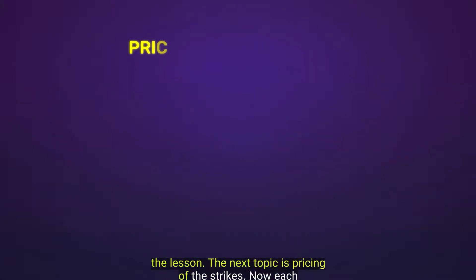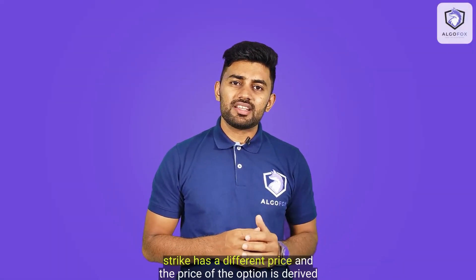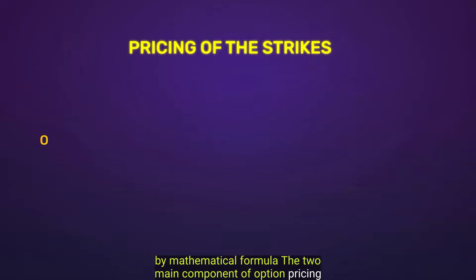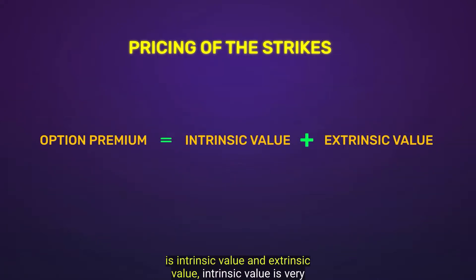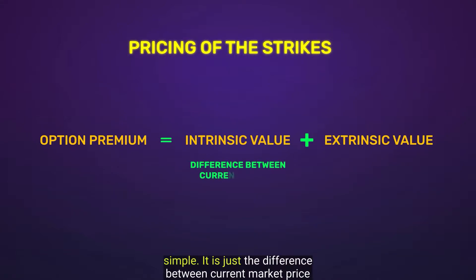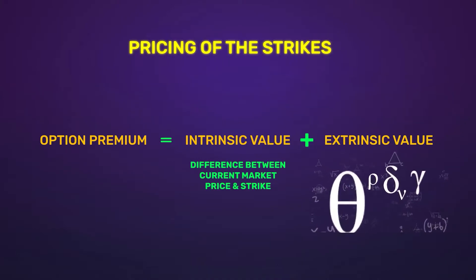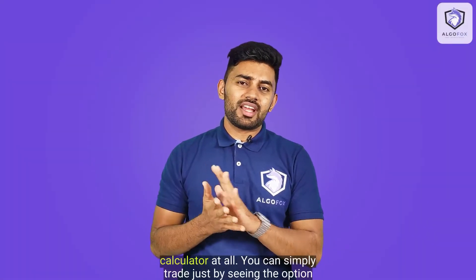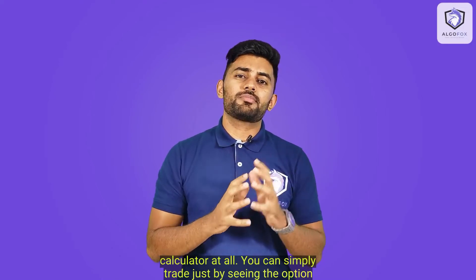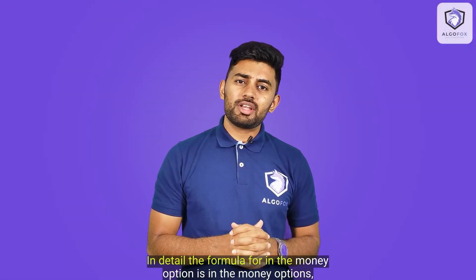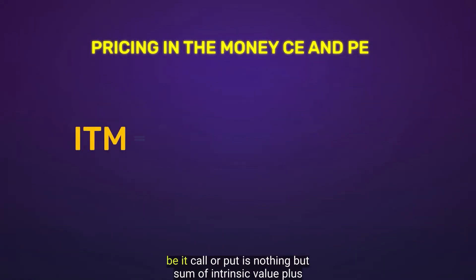The next topic is pricing of the strikes. Each strike has a different price, and the price of the option is derived by a mathematical formula. The two main components of option pricing are intrinsic value and extrinsic value. Intrinsic value is simply the difference between the current market price and the strike price. Extrinsic value is made up of a complex mathematical formula calculated using the Black-Scholes model. As a trader you need not memorize the Black-Scholes formula at all — you can simply trade by seeing the option premium. The formula for an in the money option is intrinsic value plus extrinsic value.